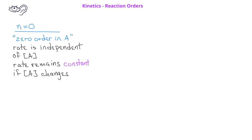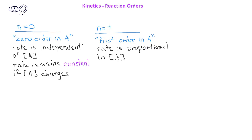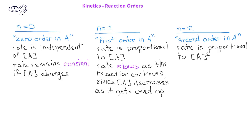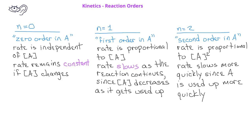If the value of n is 1, we say that the reaction is first order with respect to the reactant A. In this case, the rate is proportional to the concentration of A, and the rate decreases as the reaction continues since the concentration of A is decreasing. If the value of n is 2, we say that the reaction is second order with respect to the reactant A. In this case, the rate is proportional to the square of the concentration of A, and the rate slows even more quickly as the reaction proceeds.